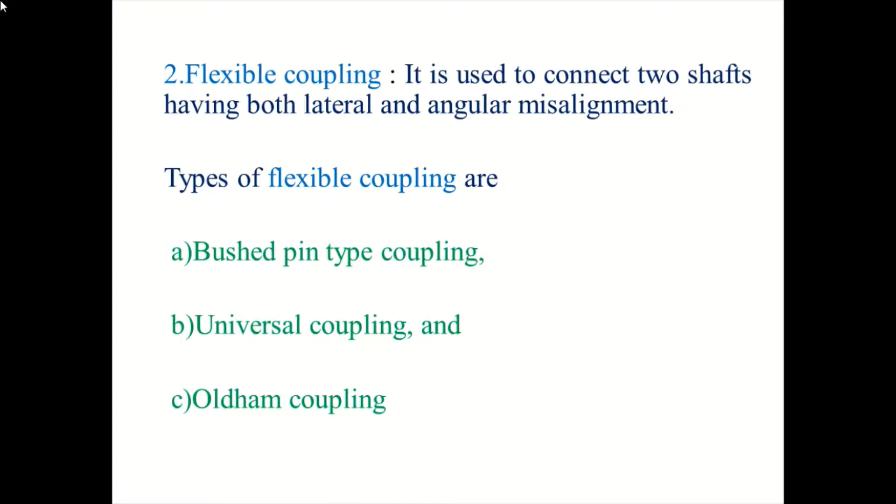Flexible coupling is used to connect two shafts having both lateral and angular misalignments. These types are bushed pin type coupling, universal coupling and Oldham coupling.